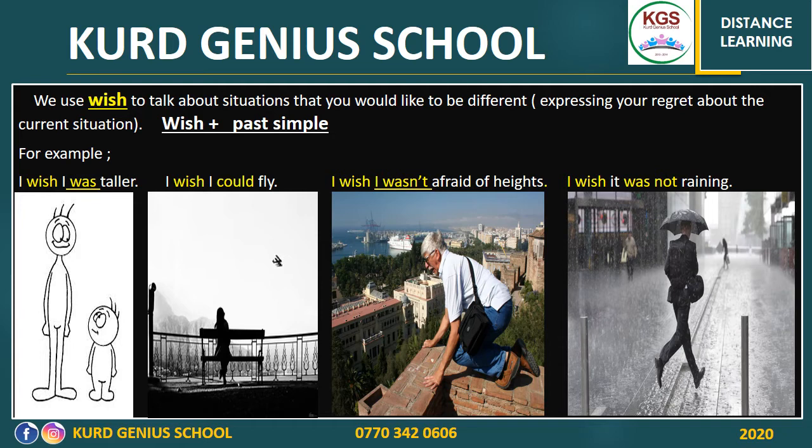Look at the second image. I think that girl is sitting on the bench, wishing that she could fly. But can we really fly? No, we can't. So in that case, we use wish about something we want to be different. You're not a bird or an airplane that is able to fly. So you say, 'I wish I could fly.' From this, you can learn that after 'wish', we should have past simple. 'I wish I was taller' — 'was' is past simple. 'I wish I could fly' — 'could' is past simple. So after wish, we should have past simple.